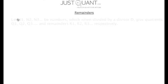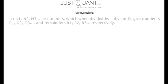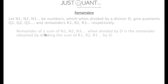Let's consider n1, n2, n3 to be some numbers which when divided by a divisor d give us quotients q1, q2, q3 and remainders r1, r2, r3 respectively. Then the remainder of the sum of n1, n2, n3 when divided by d is the remainder of r1 plus r2 plus r3 divided by d.